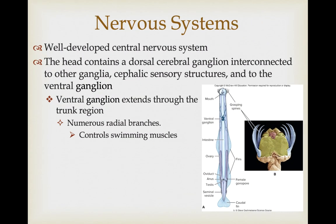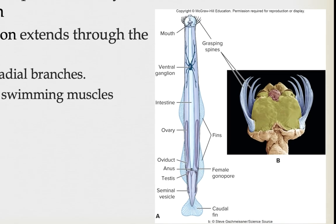They have a well-developed central nervous system. The head contains a dorsal cerebral ganglion interconnected to other ganglia that feed various sensory structures in the head. They also have a large ventral ganglia more associated with the trunk region, with lots of radial branches running to the four muscular bands important in controlling swimming.